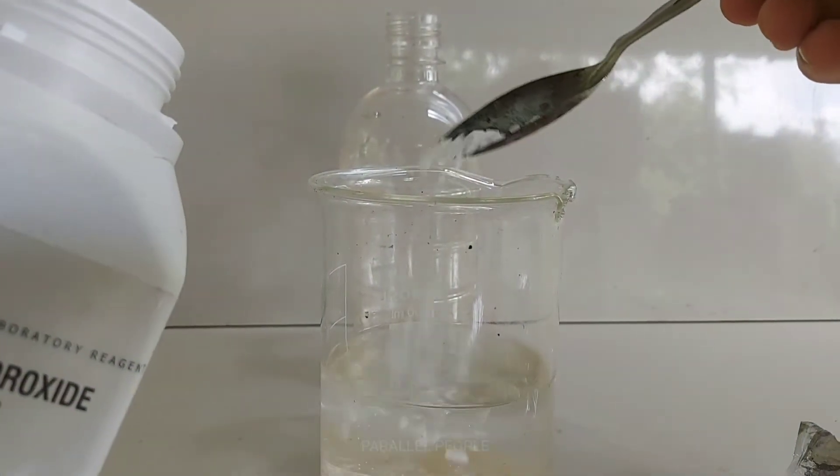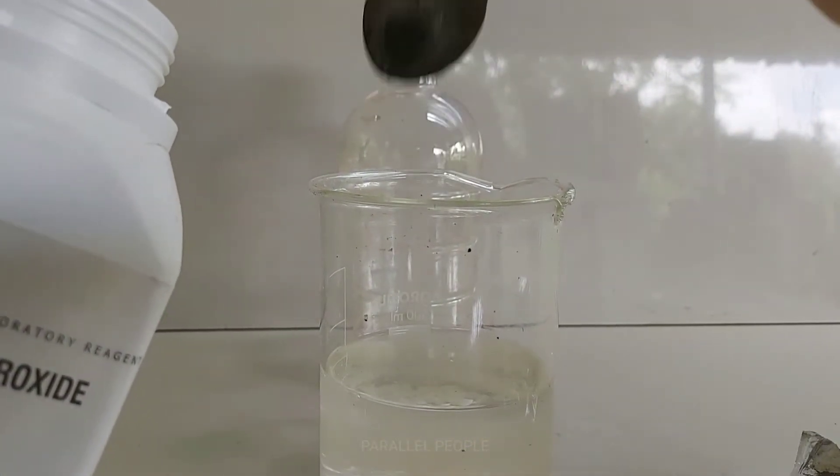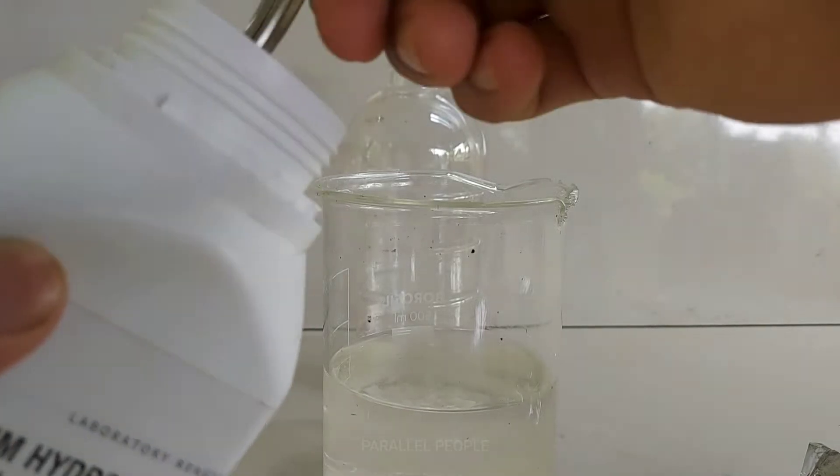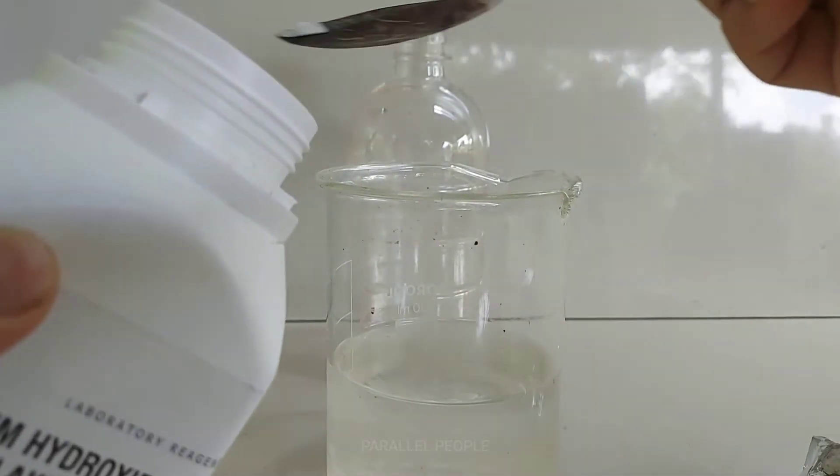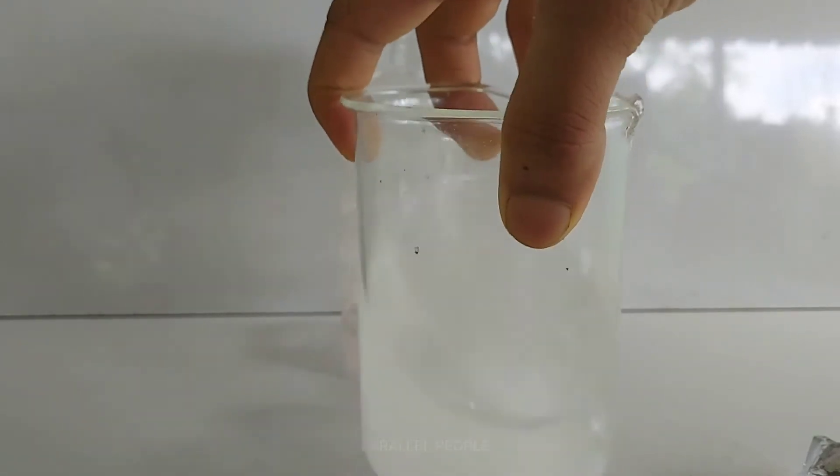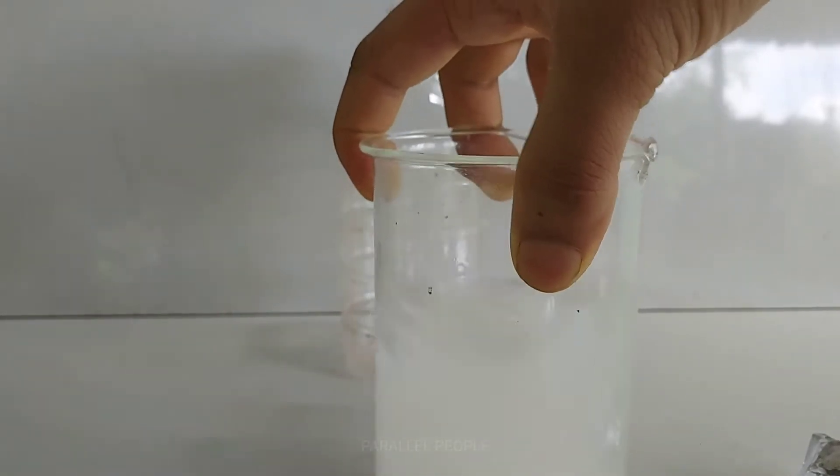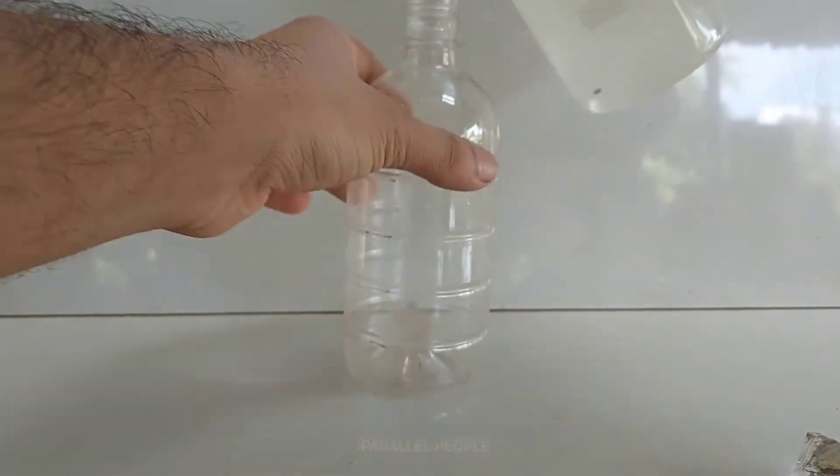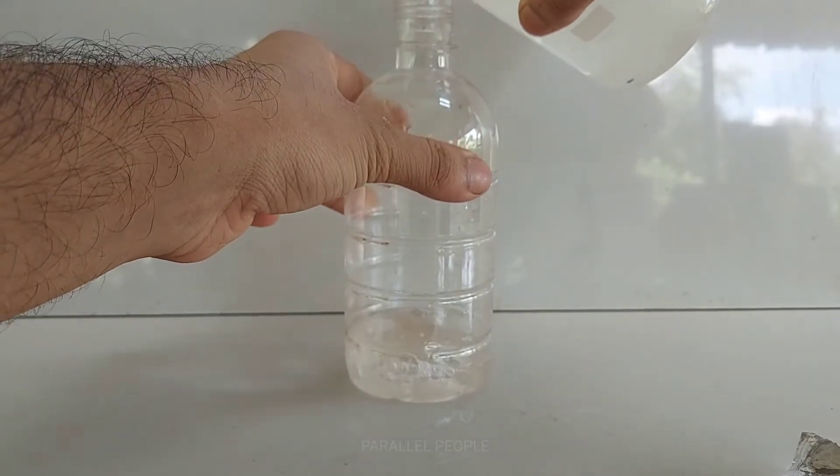Be very careful while handling sodium hydroxide or drain cleaner, because sodium hydroxide is a very powerful alkali, so it will cause chemical burns in your hands. While mixing this sodium hydroxide or drain cleaner in water, it will release a lot of heat, so do not use any plastic vessel to mix these two chemicals.